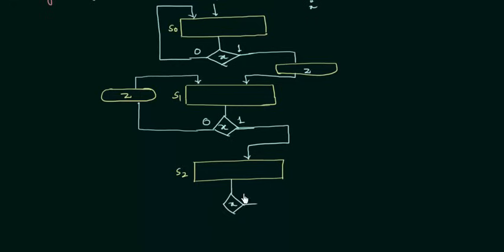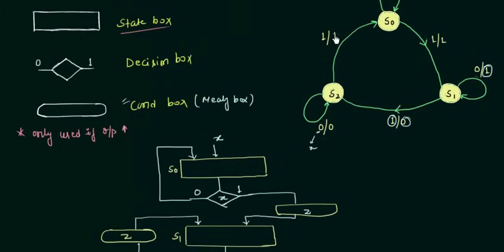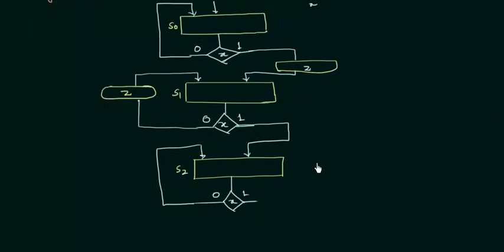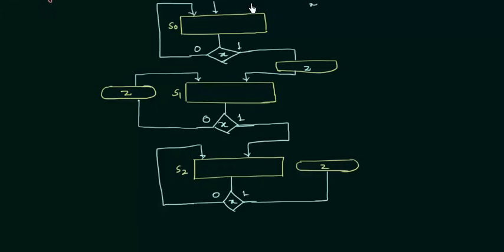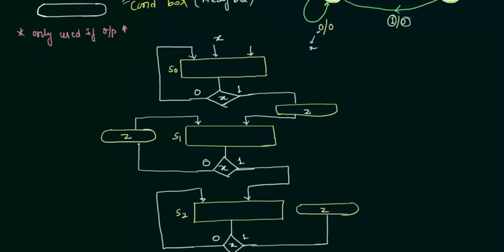On S2 I need a decision box with branches 1 and 0. If the input is 0, I remain on S2 with output 0, so no condition box is needed. If the input is equal to 1, I go to S0 with output equal to 1 — so I need another condition box, and I will transit from S2 back to S0.